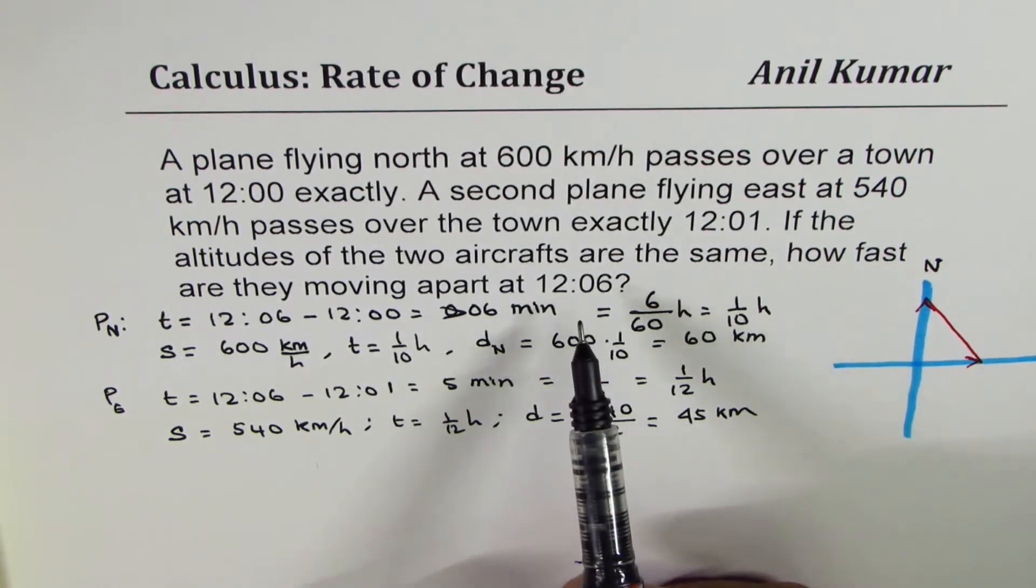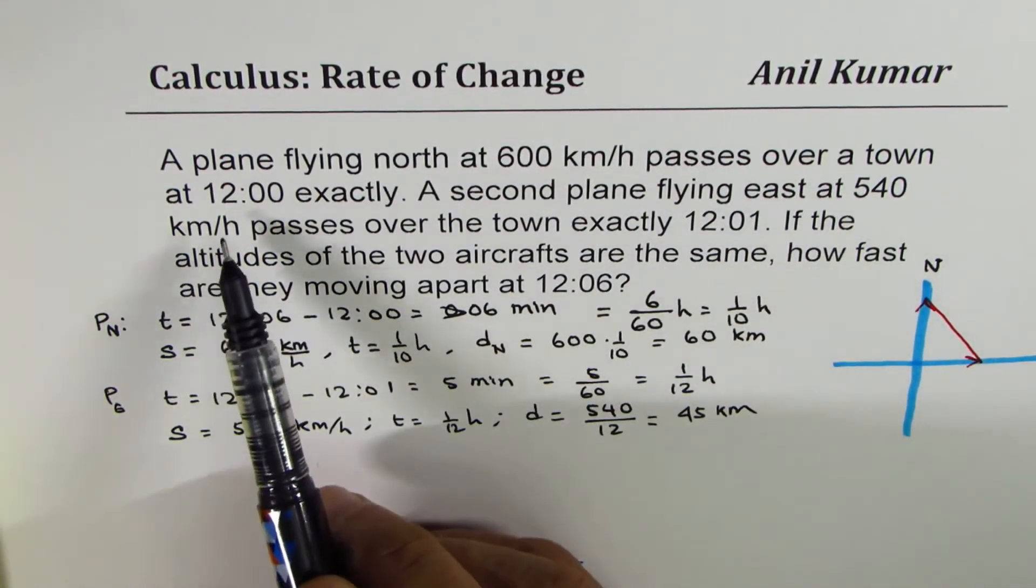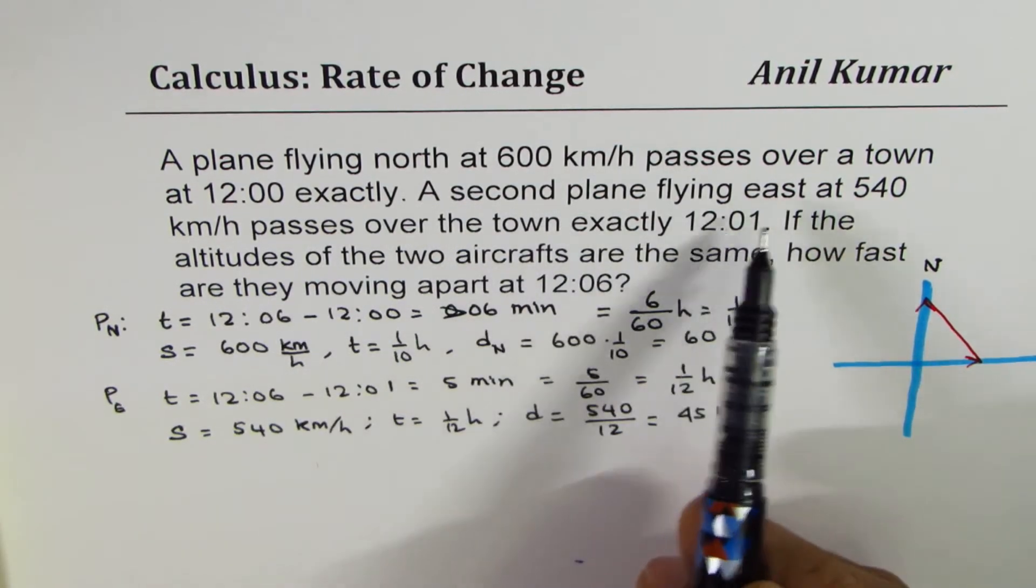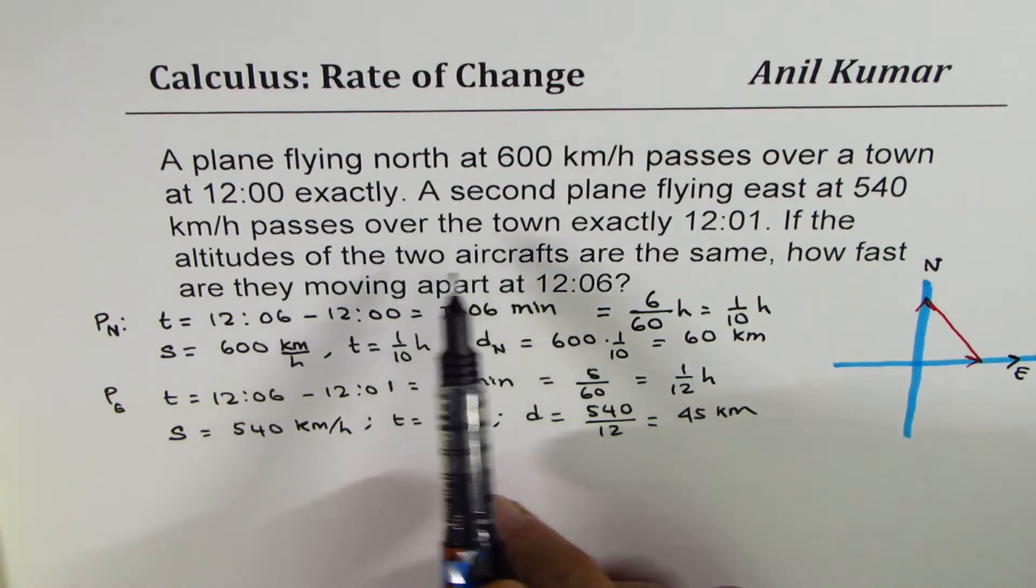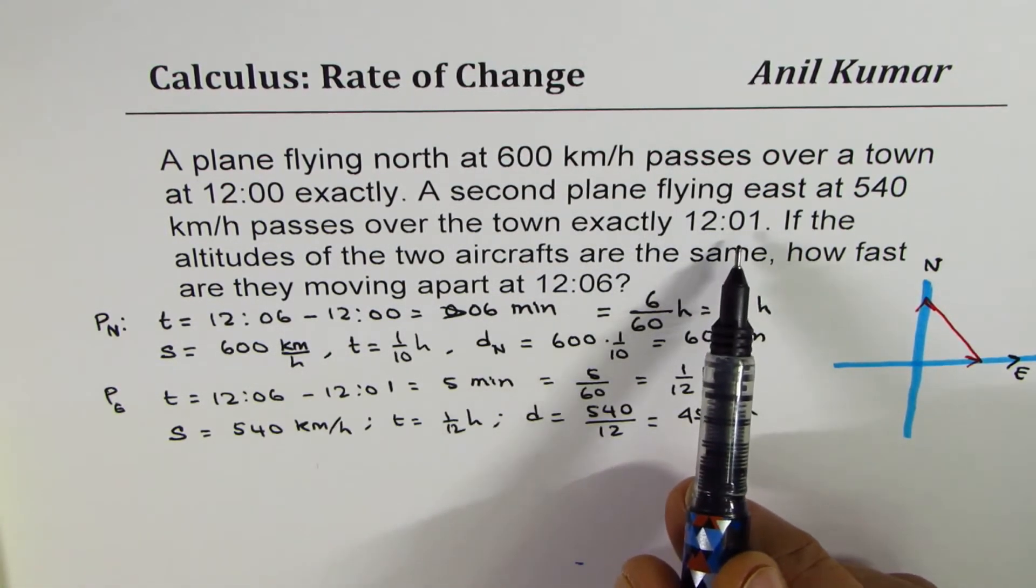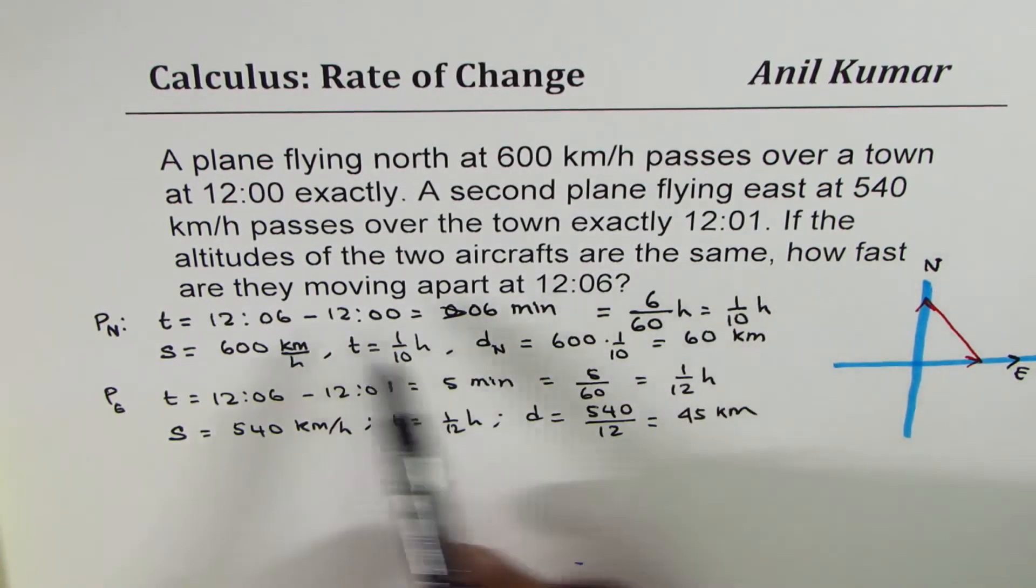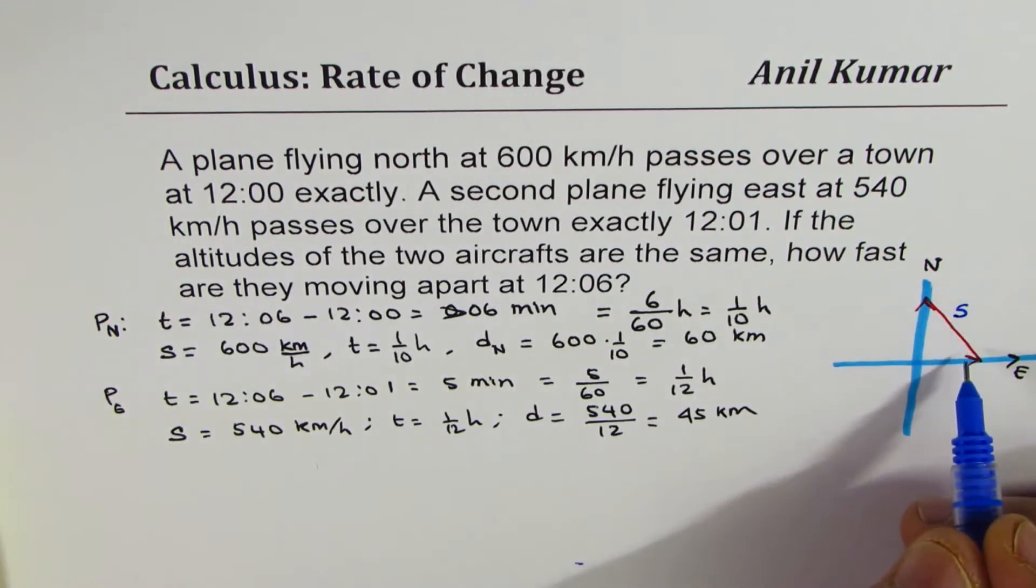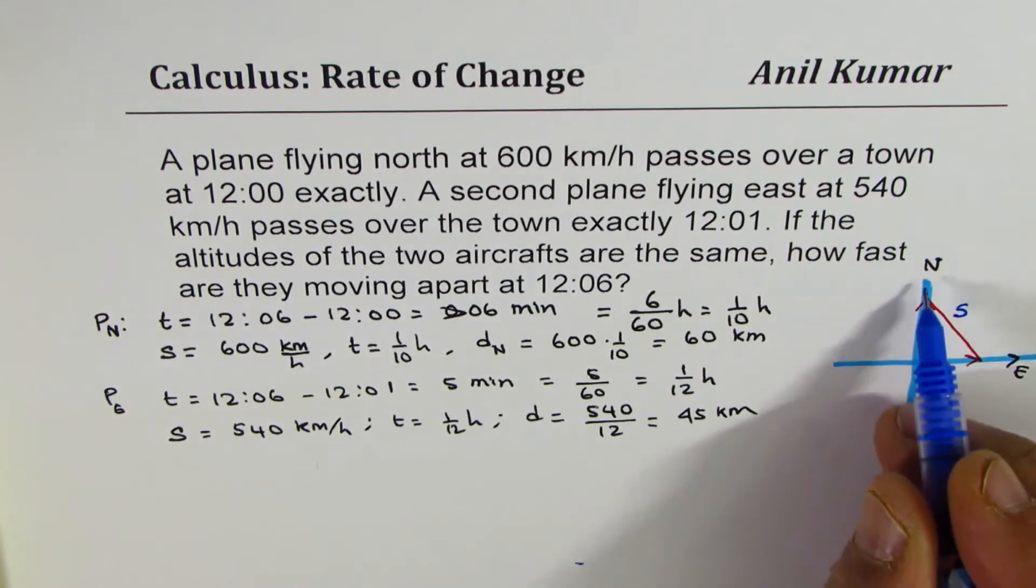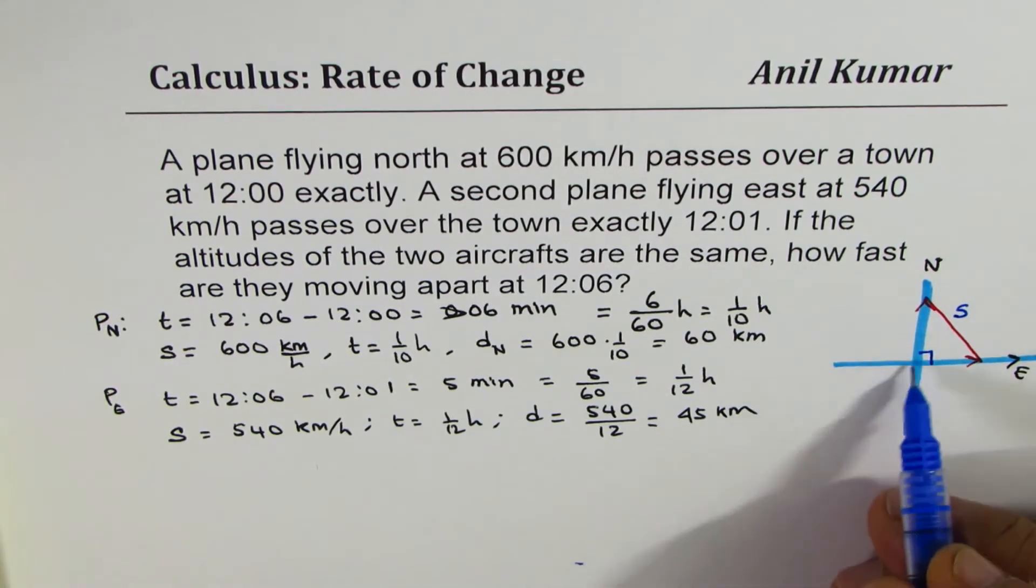Now let's read the question once again. A plane flying north at 600 kilometers per hour passes over a town at 12:00 exactly. A second plane flying east at 540. If the altitude of the two aircrafts are the same, how fast are they moving apart? Since we need to figure out how fast are they moving apart, the distance between the two planes is this distance. Let's call this as S. Now both these directions are at right angles, so we can use Pythagorean theorem to relate them.